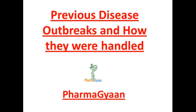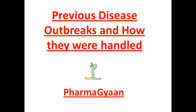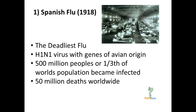Hello guys, welcome to Farm Again. This is Venkatesh and today we are going to learn about previous disease outbreaks and how they were handled. The first one is the Spanish Flu of 1918. The 1918 influenza pandemic was the deadliest pandemic in recent history, caused by the H1N1 virus with genes of avian origin, also referred to as the Spanish Flu.